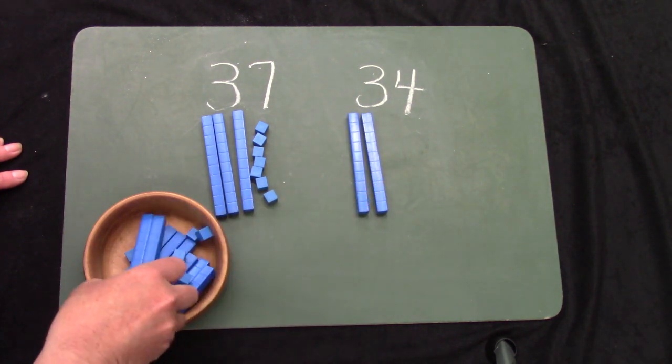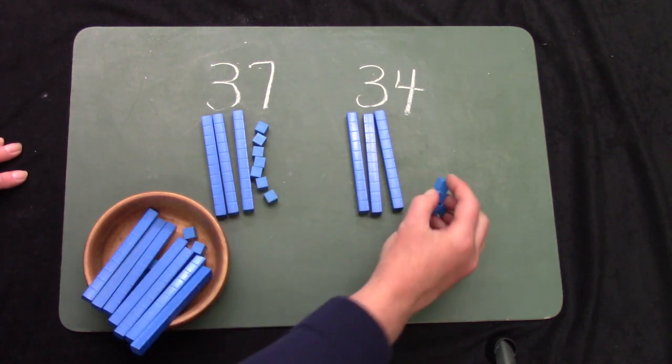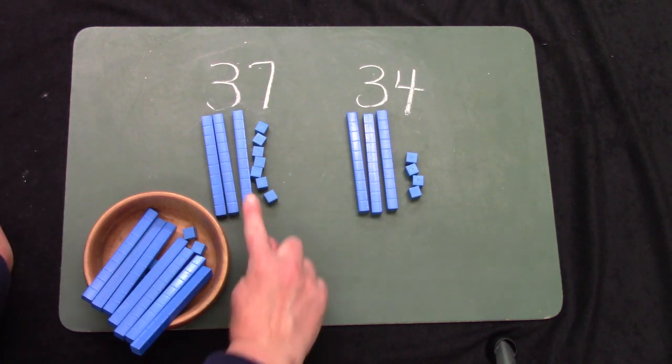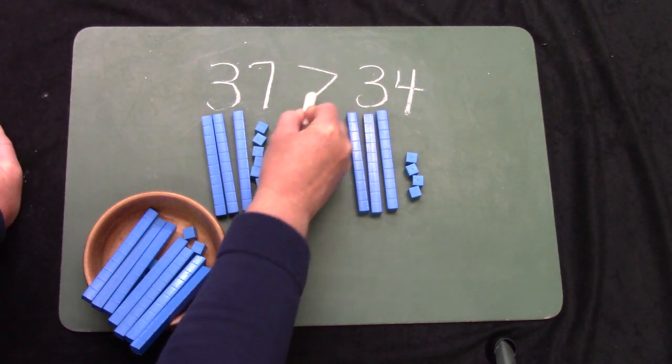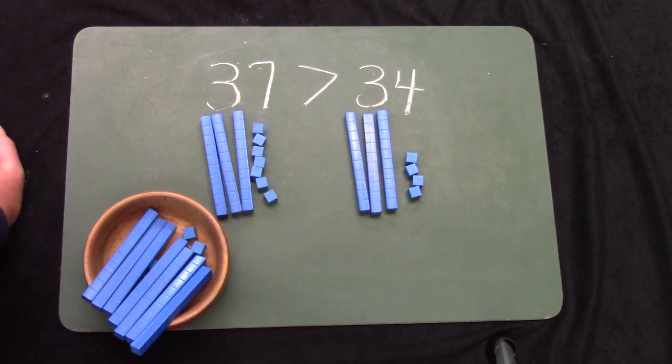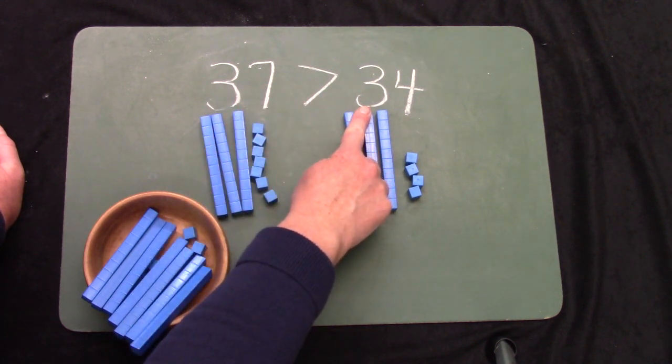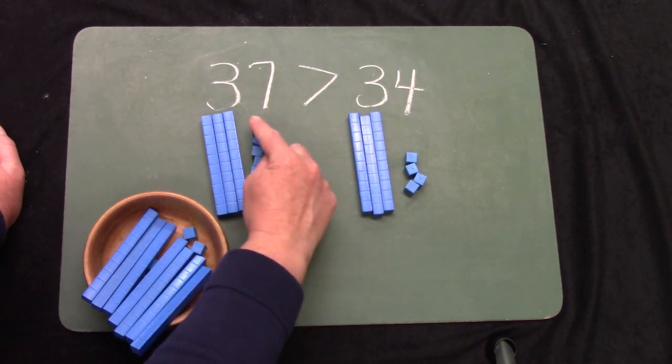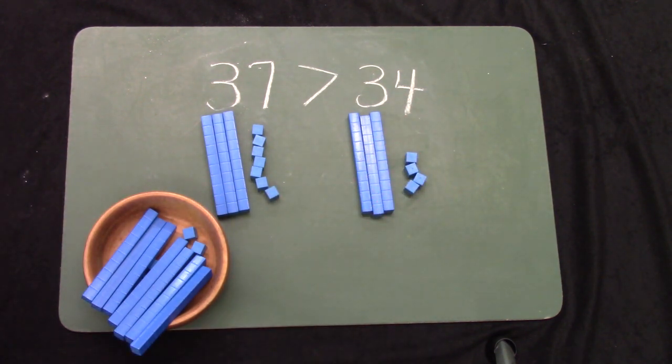For 34, I would need 3 10 rods. It's pretty easy to tell that 37 is greater than 34. Both of these numbers have the same groups of 10. They both have 3 groups of 10. When we look at our ones place, 37 has 7 ones, and 34 only has 4 of them. 37 is greater than 34.